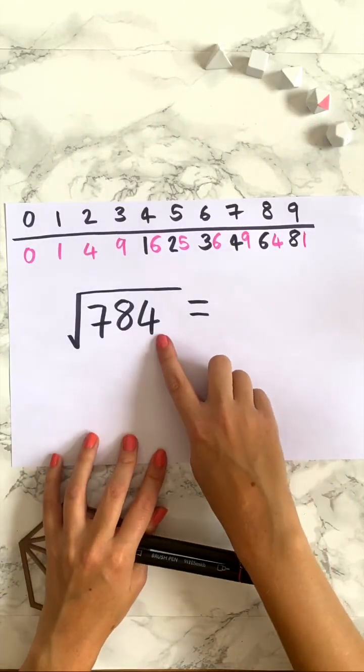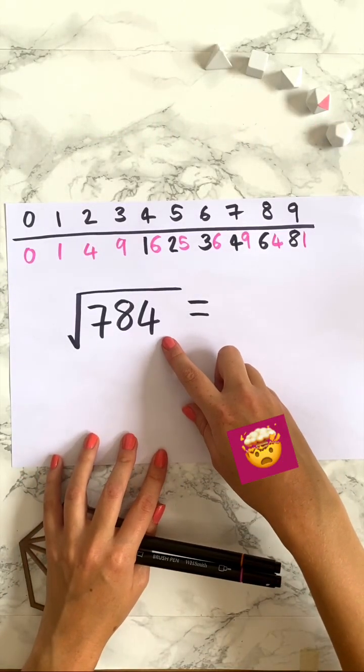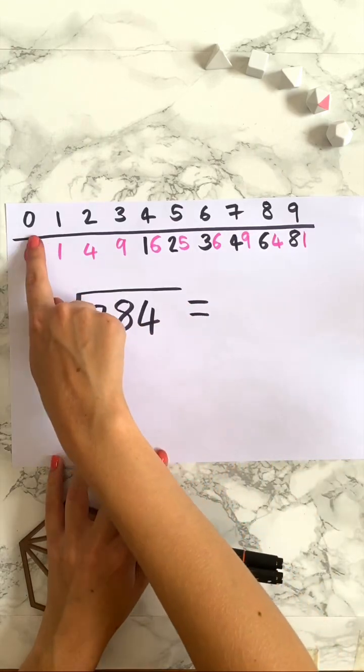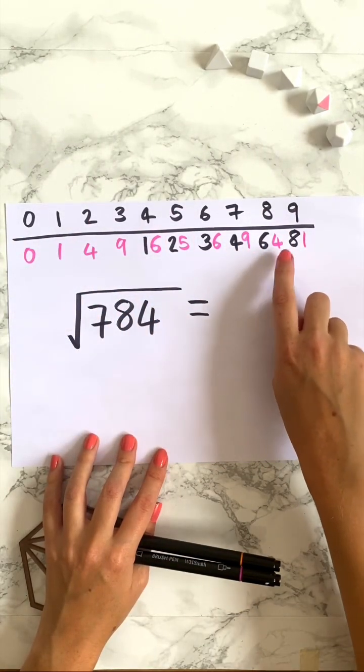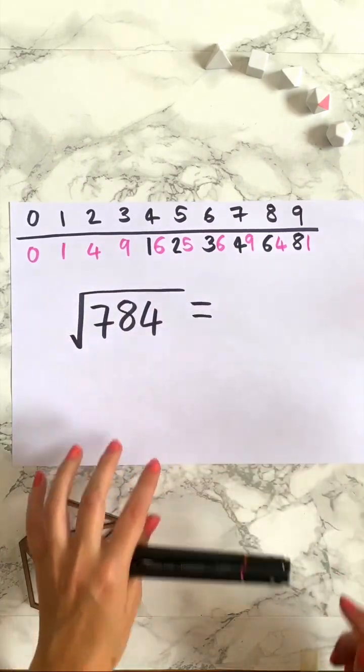Here's a trick to find the square root of any number under 10,000. What you're going to do is write the numbers 0 to 9 at the top, then write below them what their squares are and highlight the final digits of each of their squares.